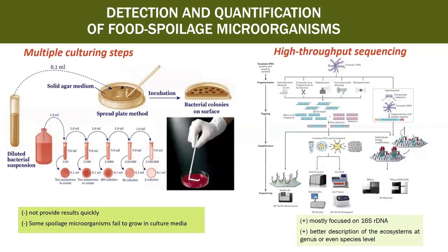There is also the detection and quantification of food spoilage microorganisms. A great number of different methodologies have been applied to evaluate food spoilage, but microbial methods have been used almost exclusively. Classical microbiological methods require multiple culturing steps for microbes to be isolated and identified, and they may not provide results quickly enough for appropriate intervention to be made. Furthermore, these methods are not always appropriate since some spoilage microorganisms fail to grow in culture media.